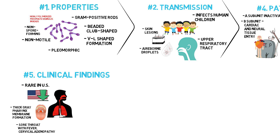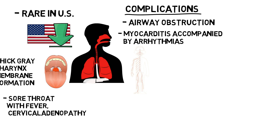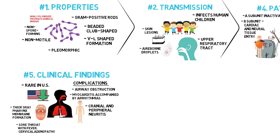There are three prominent complications. Number one, extension of the membrane to the larynx and trachea causing airway obstruction. Number two, myocarditis accompanied by arrhythmias and circulatory collapse. Number three, nerve weakness or paralysis, especially of the cranial nerves, as well as peripheral neuritis affecting the muscles of the extremities.